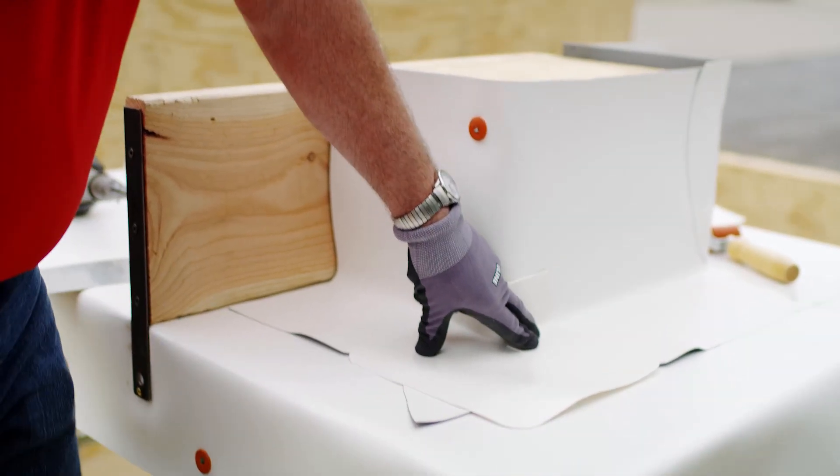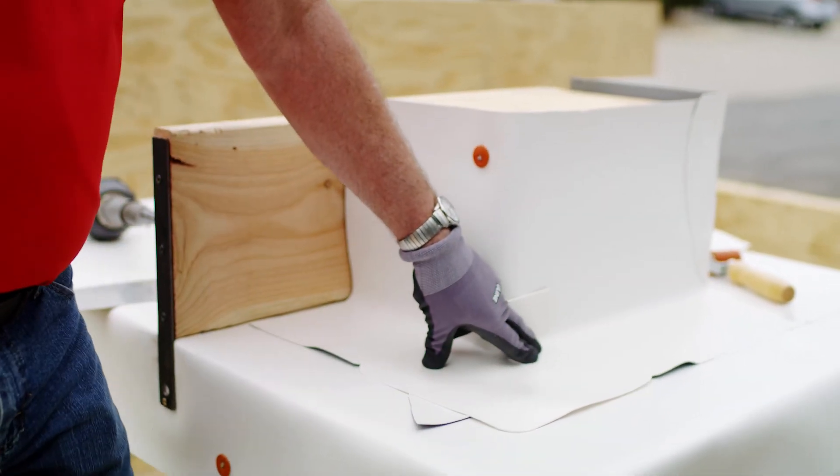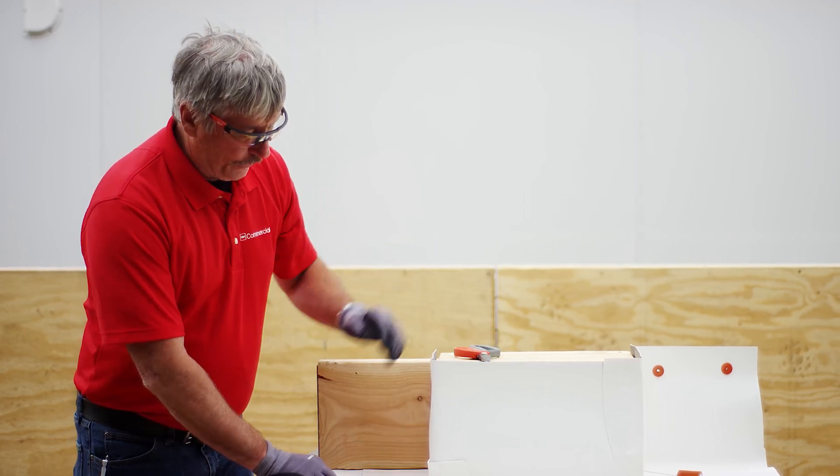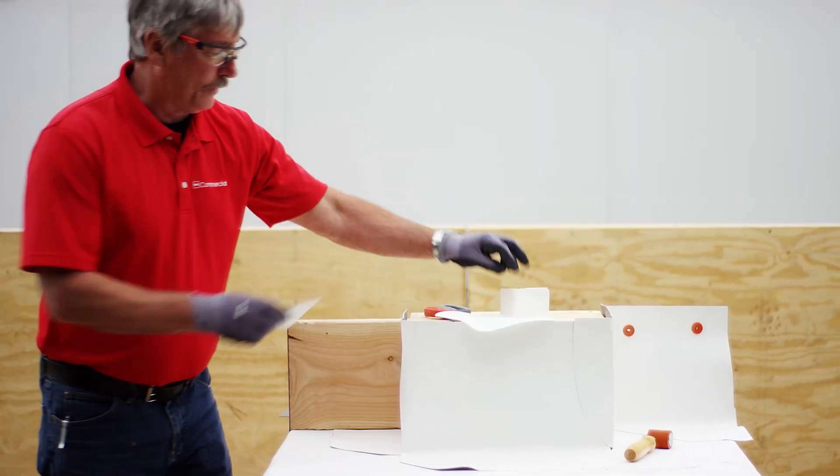Okay, so again, we have T-joint areas, we got to pay special attention to these. All right, let me get the rest of this flashing welded down, then we'll tackle this outside corner.